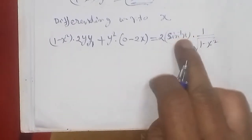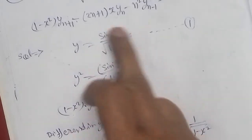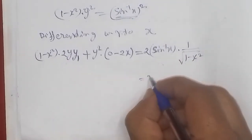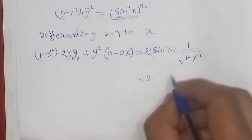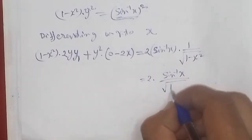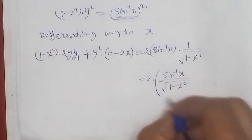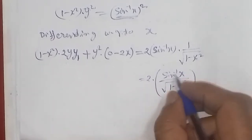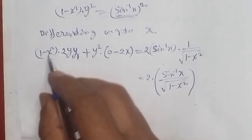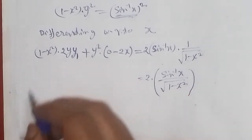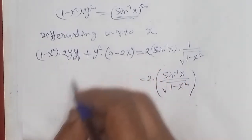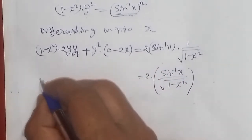We recognize this value using equation number 1. The value sin inverse x upon square root of 1 minus x square equals y, from equation 1. So we substitute that. Multiplying by 2, we get sin inverse x upon square root of 1 minus x square, which equals y. On the left hand side the plus converts to minus after rearranging.